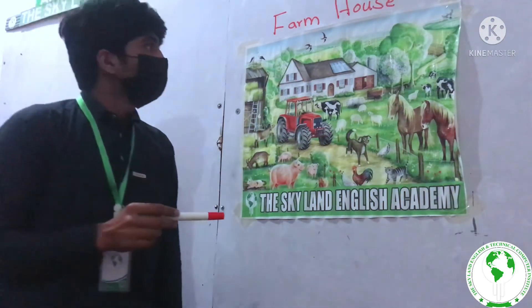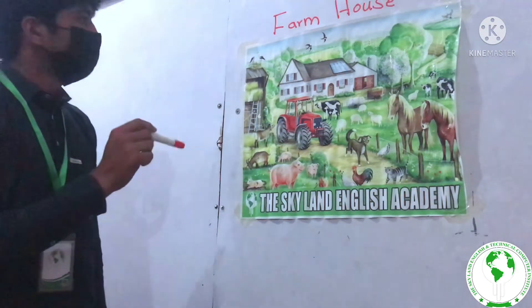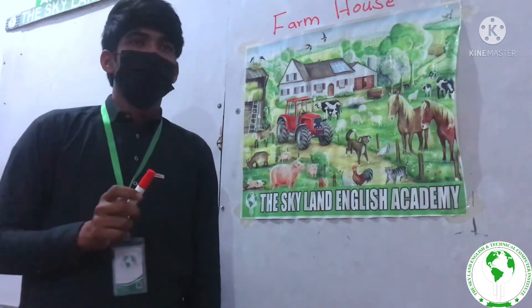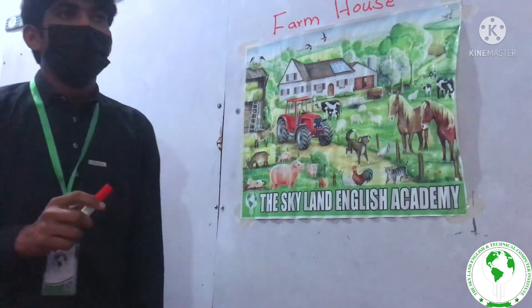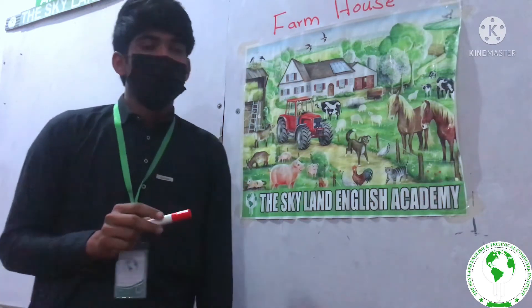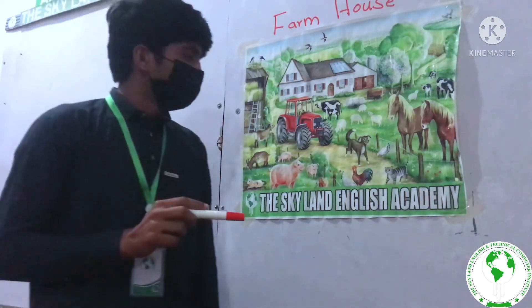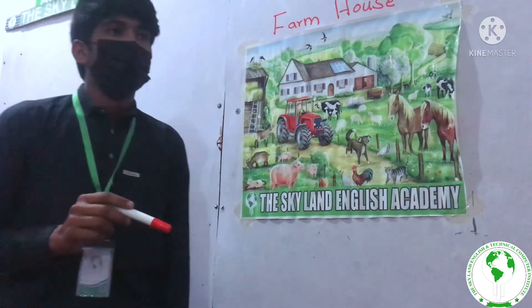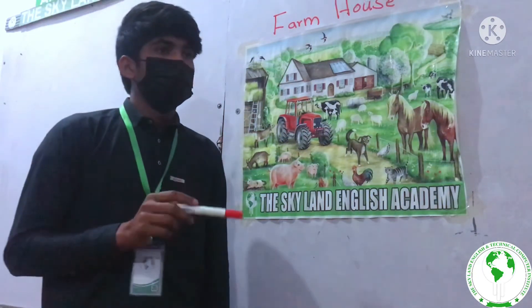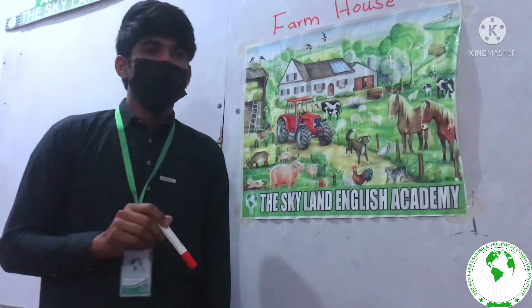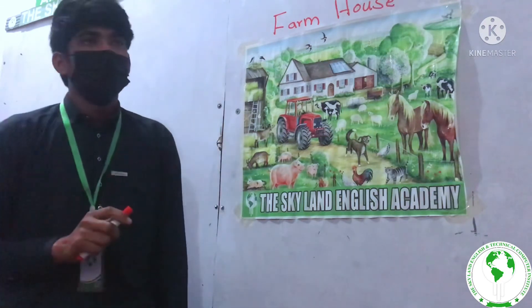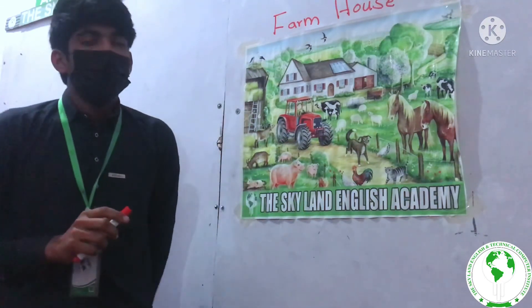The title of this picture is 'A Farmhouse.' A farmhouse is a place where many kinds of animals — like cows, horses, and dogs — are present. We get many benefits from the farmhouse.